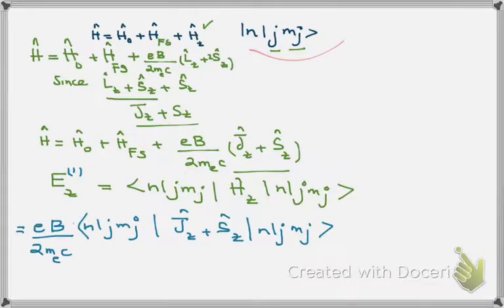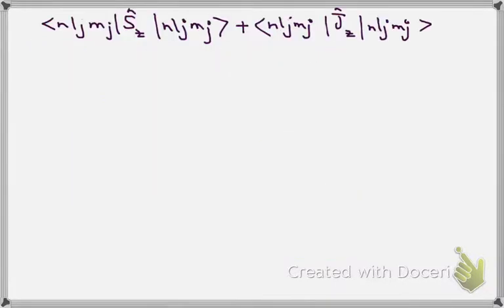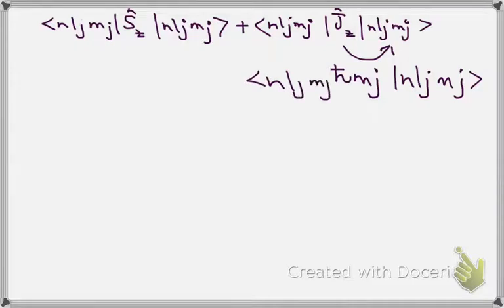Now the problem is to solve this matrix element. I have just split that matrix element as you can see. The second term, J is even applied on eigenstate, we can have ℏmj and the eigenstates as it is. So the matrix element will be equal to ⟨n,j,mj|⟩ and the whole term is equal to ℏ times mj.